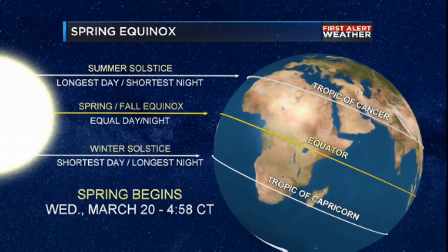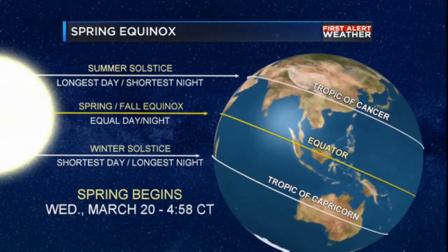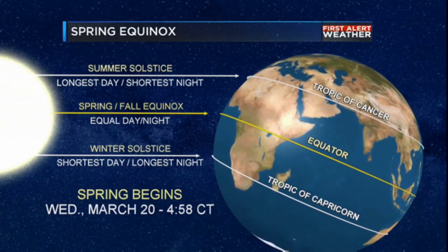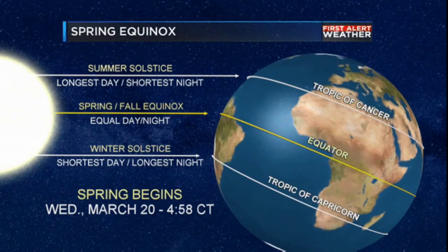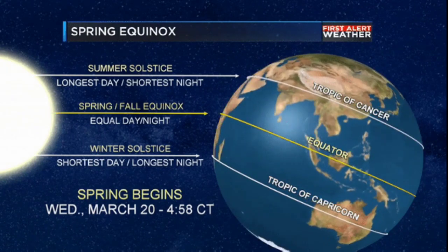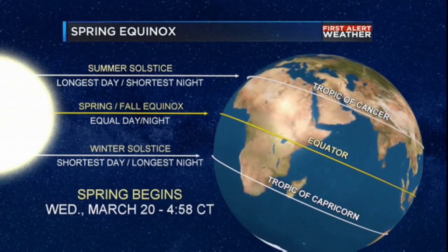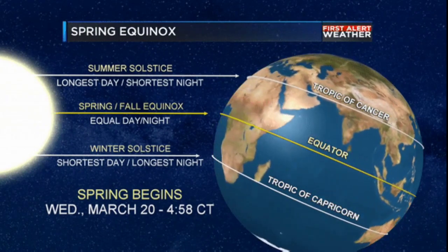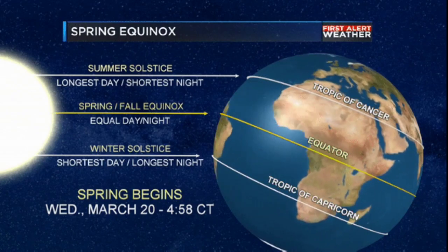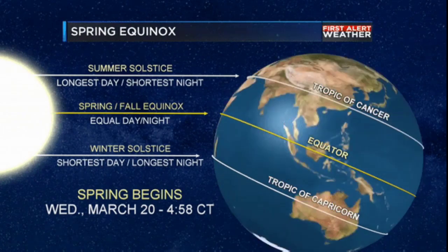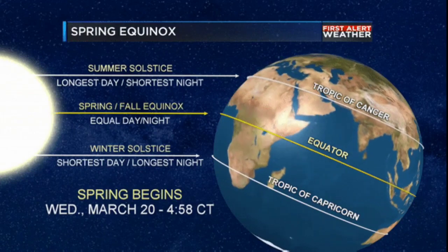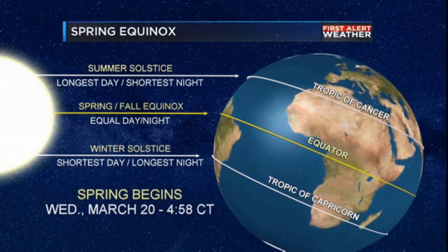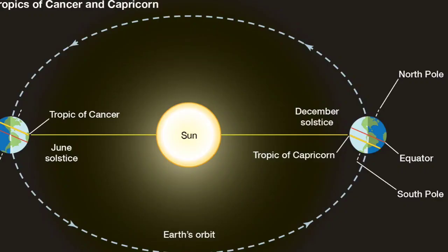21st June is called summer solstice as the vertical rays of the sun fall on the Tropic of Cancer on that day. As a result, the northern hemisphere has the longest day and shortest night on this day. Whereas 22nd December is called winter solstice, as the vertical rays of the sun fall on the Tropic of Capricorn. As a result, in the northern hemisphere it is the shortest day and longest night on this day.